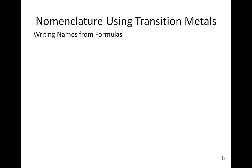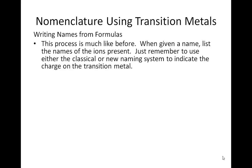Let's look at writing names if you're given the formula for a compound containing a transition metal. Remember, transition metals are all those B groups in the middle of the periodic table, like iron, copper, cadmium, and zinc. This process is much like before — when given a formula, you're going to list the names of the ions present, using classical or new naming to indicate the charge on the transition metal.